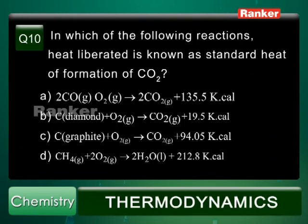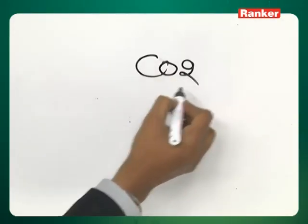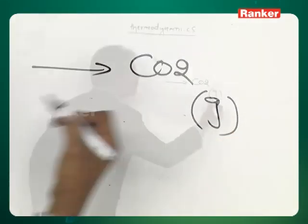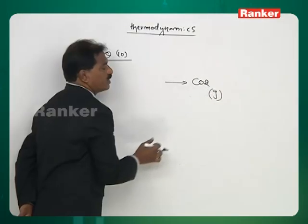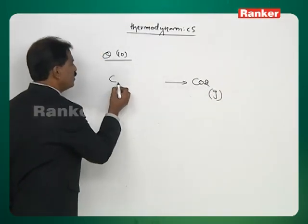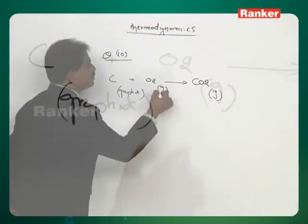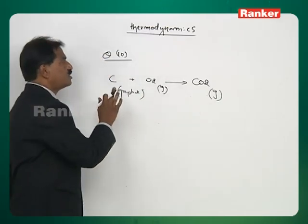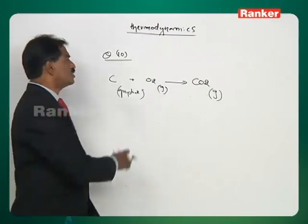Question number 10. In which reaction is the heat liberated known as standard heat of formation of CO2? For a standard formation reaction, 1 mole must appear on the product side in its standard state. For CO2, 1 mole of graphite combines with 1 mole of O2 to give 1 mole of CO2(g). Option C shows graphite + O2 → CO2. Answer is C.